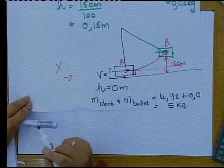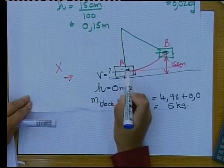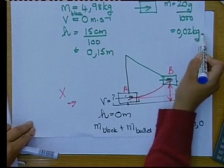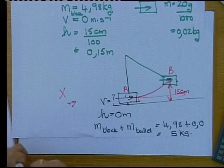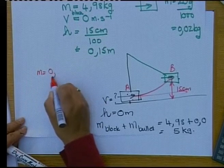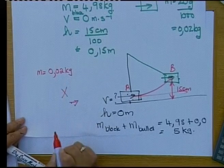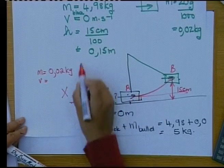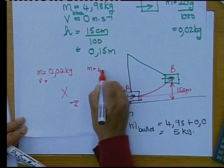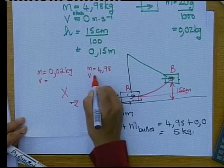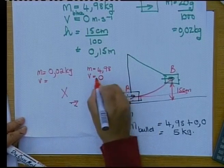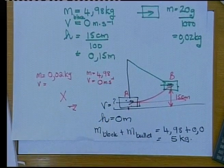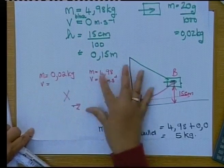We have two objects: the bullet and the block. Before the collision, the mass of the bullet is 0.02 kg and it is moving, so it has some velocity. The mass of the block is 4.98 kg, and the block is stationary, so its velocity is 0 m/s.